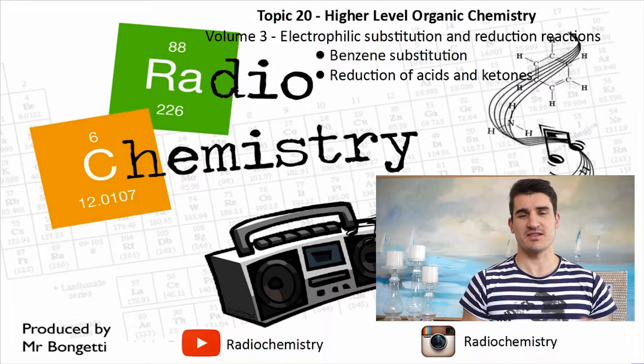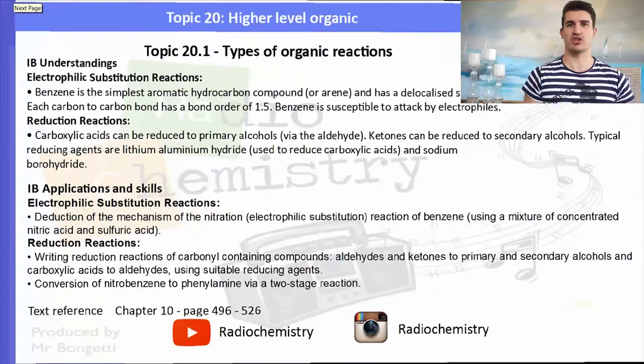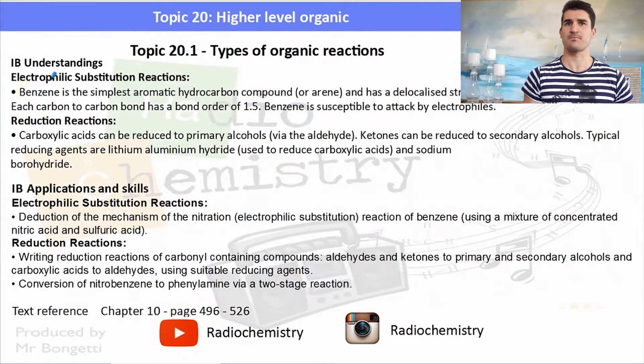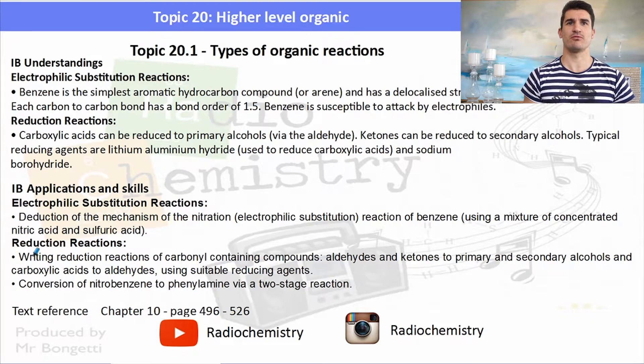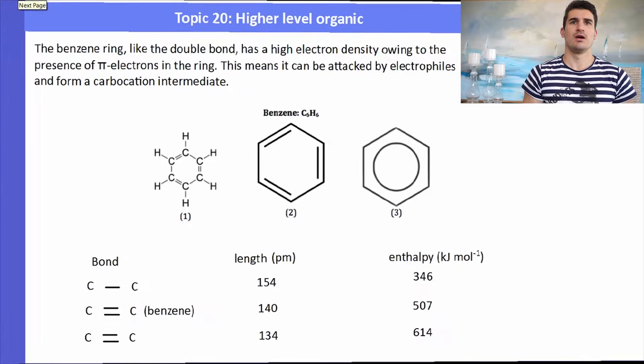Electrophilic substitution and reduction reactions. We look at the reactions of benzene substitution and reductions of acids and ketones. The IB understandings, applications and skills focus around electrophilic substitution of benzene and we need to know the mechanism. We also need to understand the mechanism for the reduction reactions of alcohols and ketones and know the reagents that we need to use.